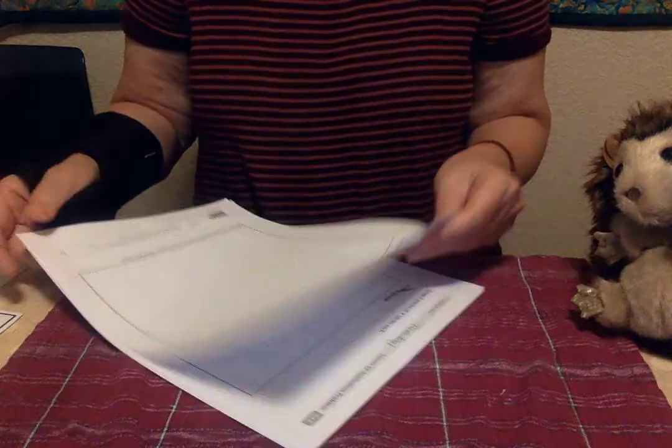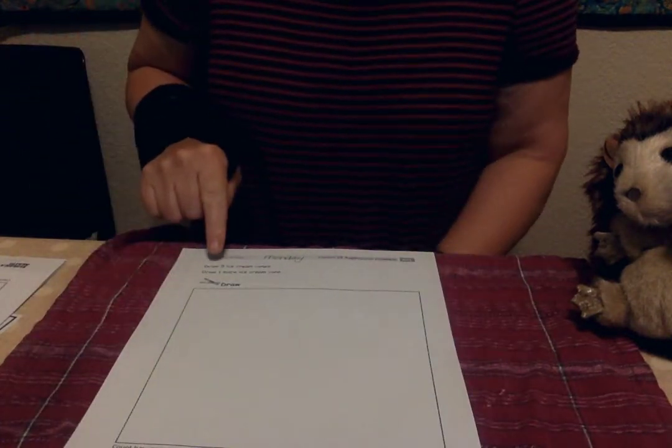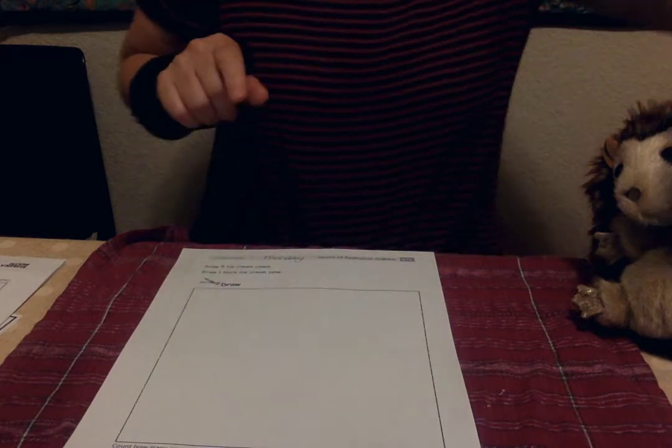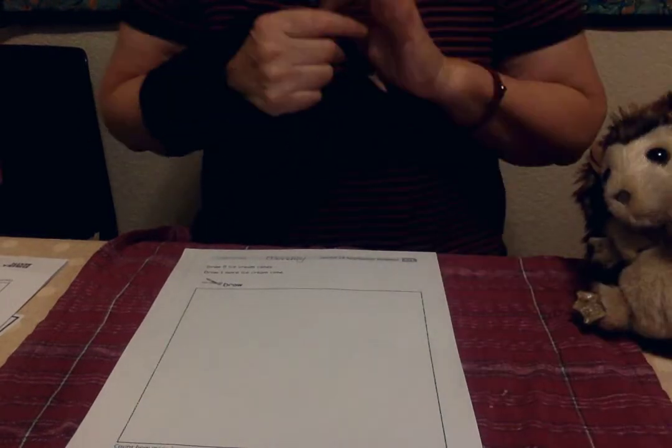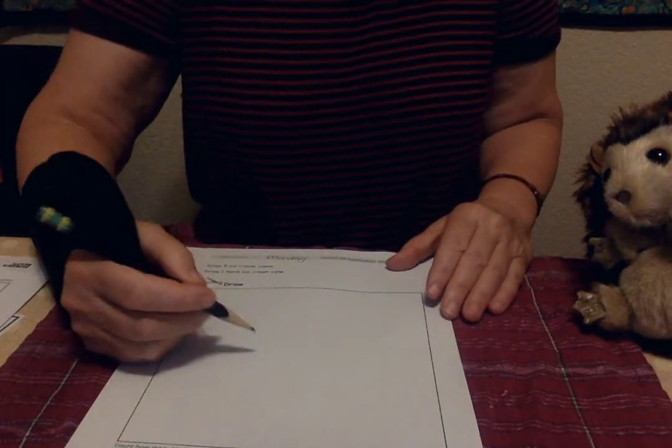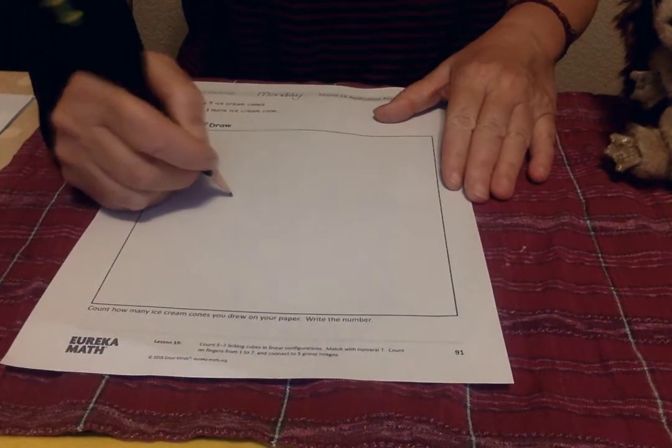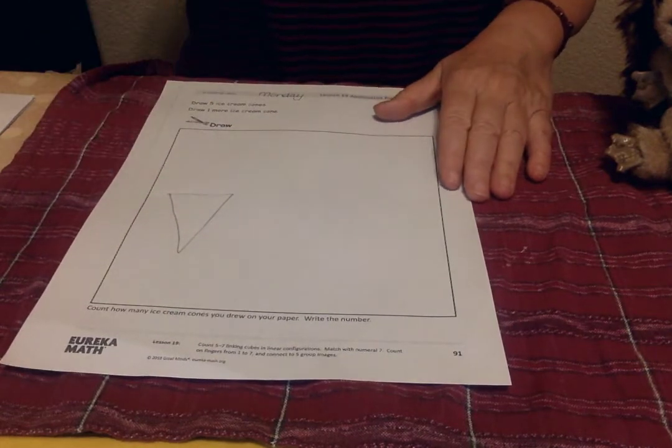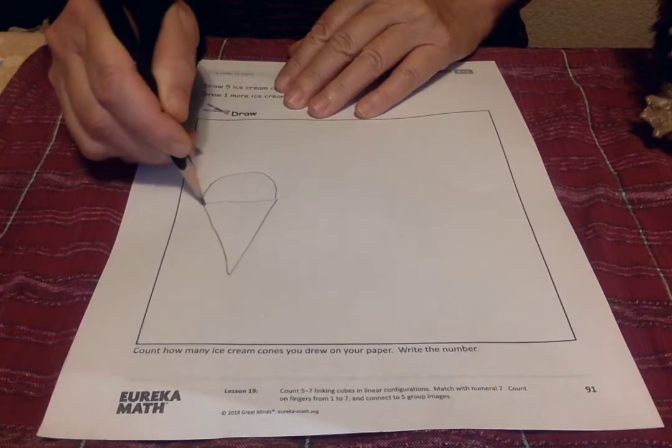All righty, our math page today. It's kind of fun. It says draw five ice cream cones. Oh, now that is something I can do because I like ice cream cones. You know a nice way of drawing a cone is to think about a triangle because cones have this sort of triangle shape. Can you see that? I hope so. And then I put a ball on top.